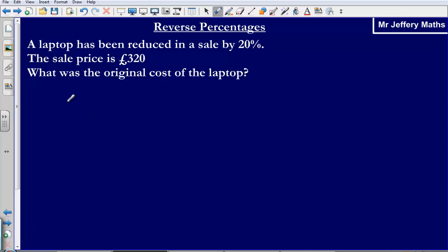So first things first, let's think carefully about what's happened. We are told that a laptop that we don't know the price of has been reduced in a sale by 20%. So this laptop has had 20% taken off of its value. Then we are told that when this has happened, it is equal to £320. So after 20% has been taken off, we are left with £320. We are being asked to find out what the original cost of the laptop was. So what is this mystery amount?